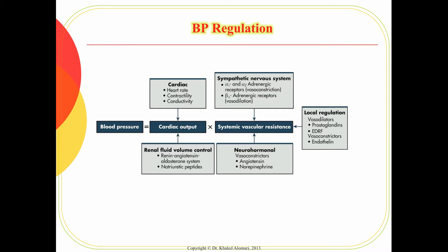Remember we talked earlier that blood pressure depends on cardiac output and systemic vascular resistance, and every factor of these depends on a lot of other things. Cardiac output depends on heart rate, contractility, and conductivity. So the blood pressure problem could be in any of these areas. Systemic vascular resistance depends on the adrenergic receptors, so this could mean neuro-hormonal activation that could also lead to high blood pressure. It also depends on regulation within the blood vessels — endothelial injury, for example, can narrow the blood vessels and cause vasoconstriction, eventually causing high blood pressure.